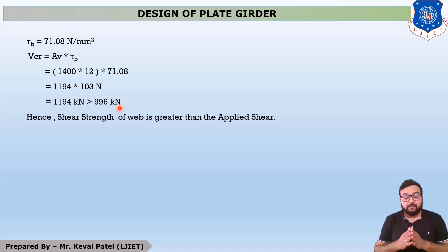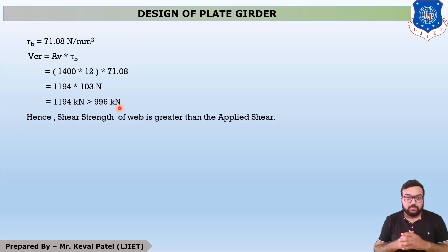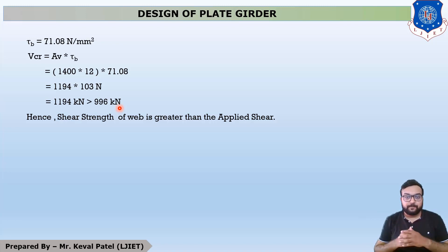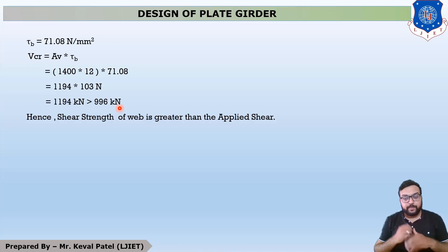Moving to the last step — anchor force. In this example, we are not providing any intermediate stiffeners, only end stiffeners. Whenever the example specifies end stiffeners only, you do not need to solve step number 8 and solve only up to step number 7. This is the end of example number 1. We will move to example number 2 in the next lecture. Thank you.